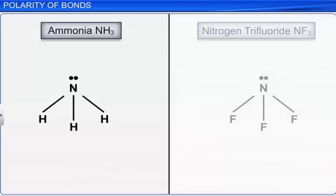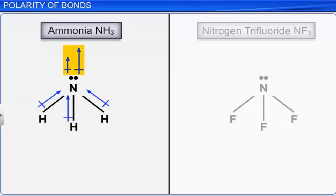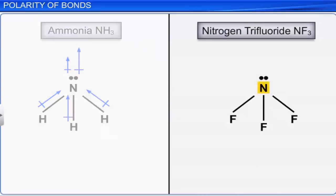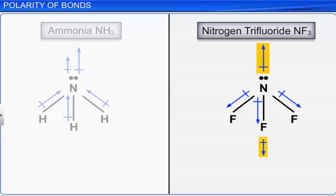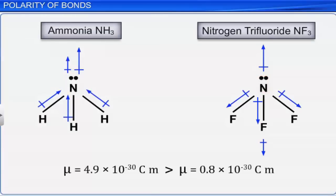In the ammonia molecule, there is a lone pair of electrons on the nitrogen atom and three nitrogen-hydrogen bonds. The bond dipole is directed towards nitrogen as it is more electronegative than hydrogen. The resultant dipole moment is in the same direction as the orbital dipole due to the lone pair of electrons on the nitrogen atom. In nitrogen trifluoride, since fluorine is more electronegative, the bond dipole is towards fluorine, and the resultant dipole moment is in the opposite direction of the orbital dipole due to the lone pair. Hence, the dipole moment of ammonia is more than that of nitrogen trifluoride.